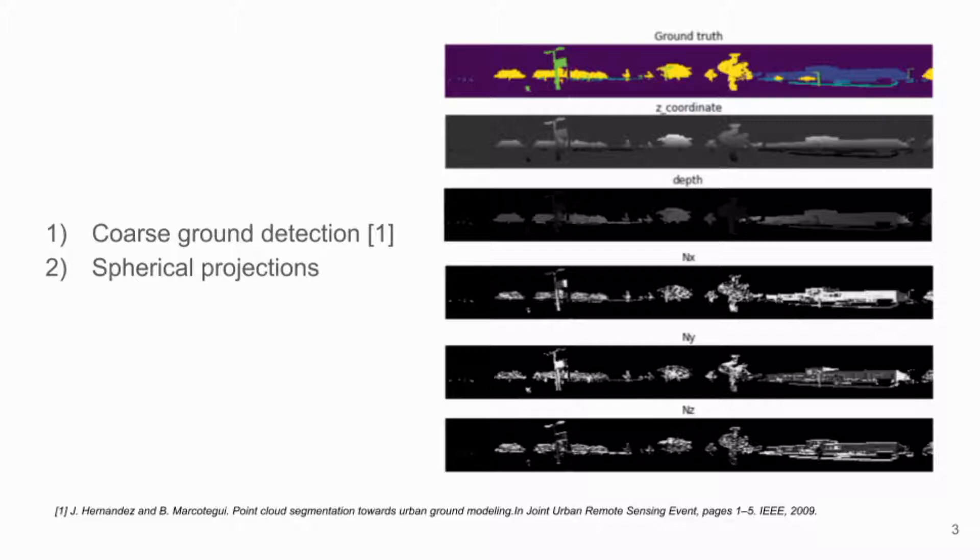Then, in the second stage, we compute a spherical projection and calculate the features to train the model. During the challenge, we selected five features: z-coordinate, depth, and the three components of the normal vector by pixel. In the slide are presented the computed features for one point cloud from the dataset.